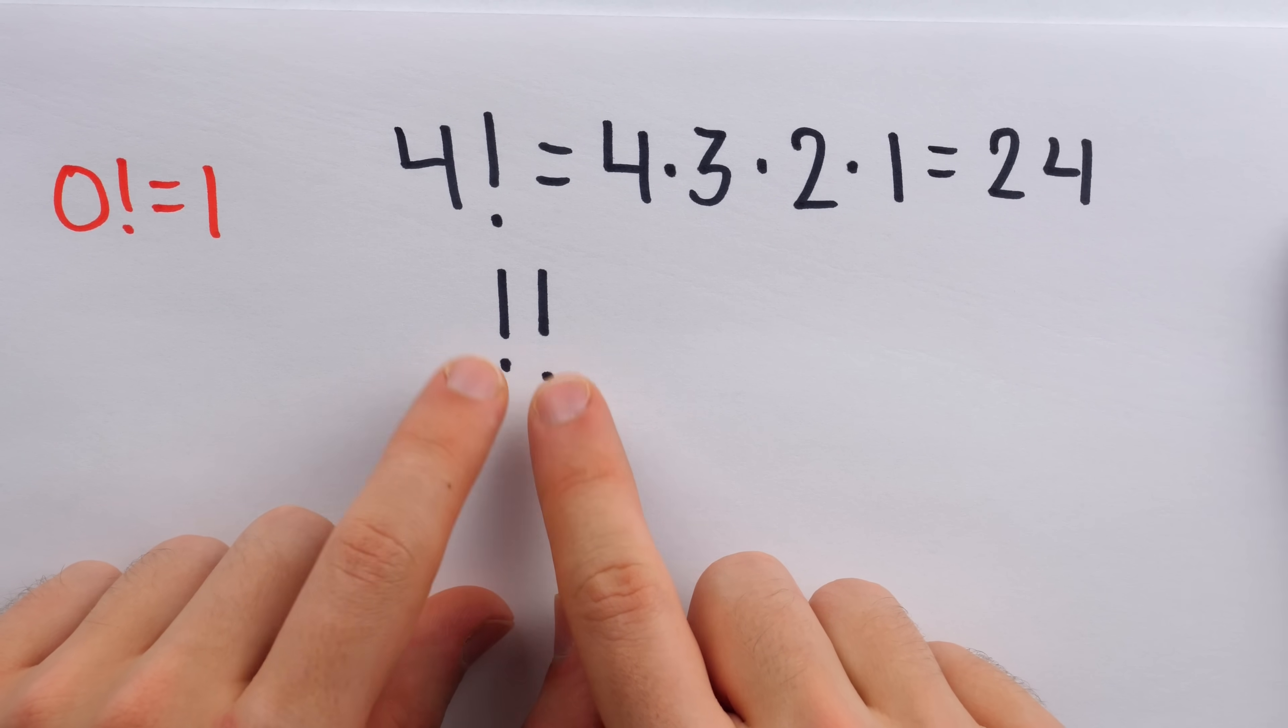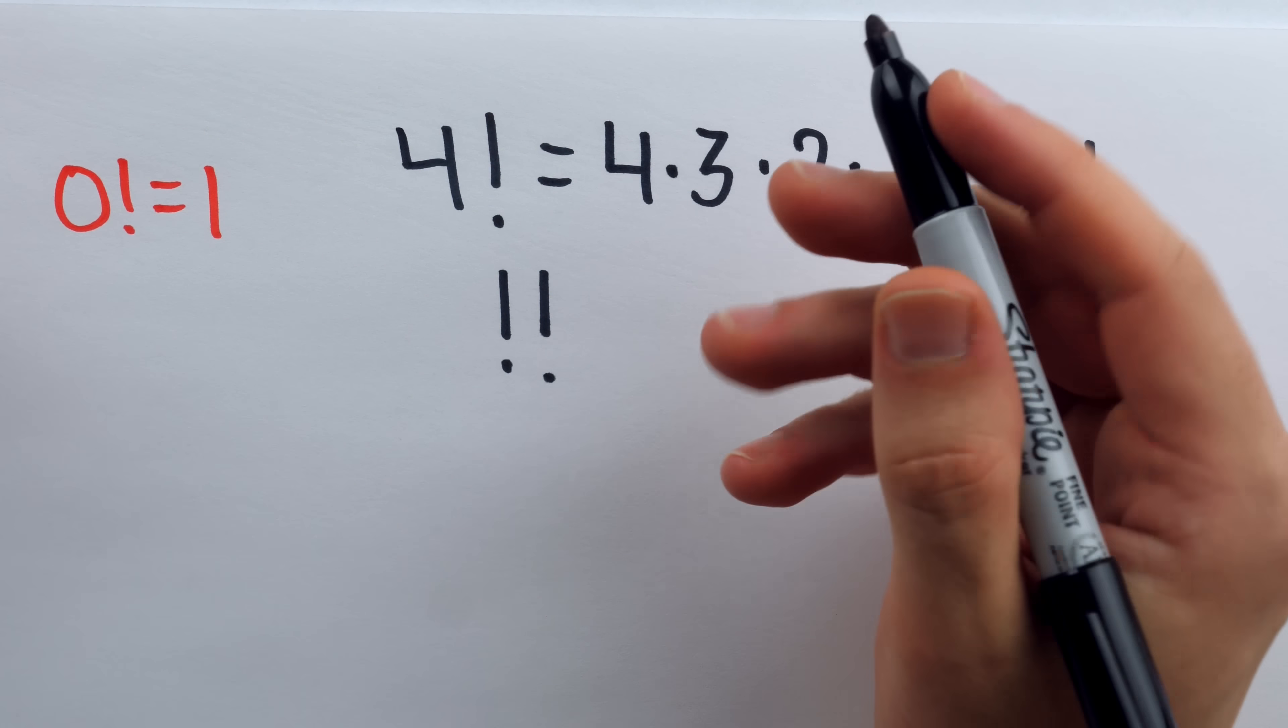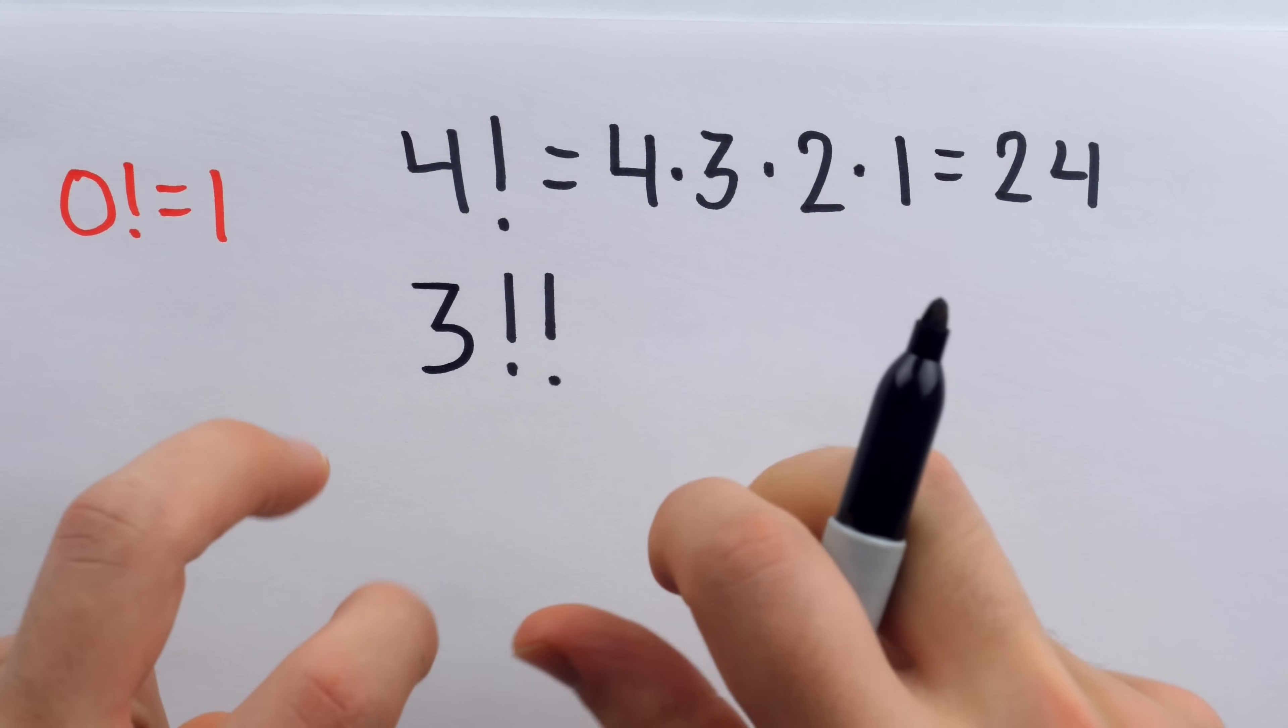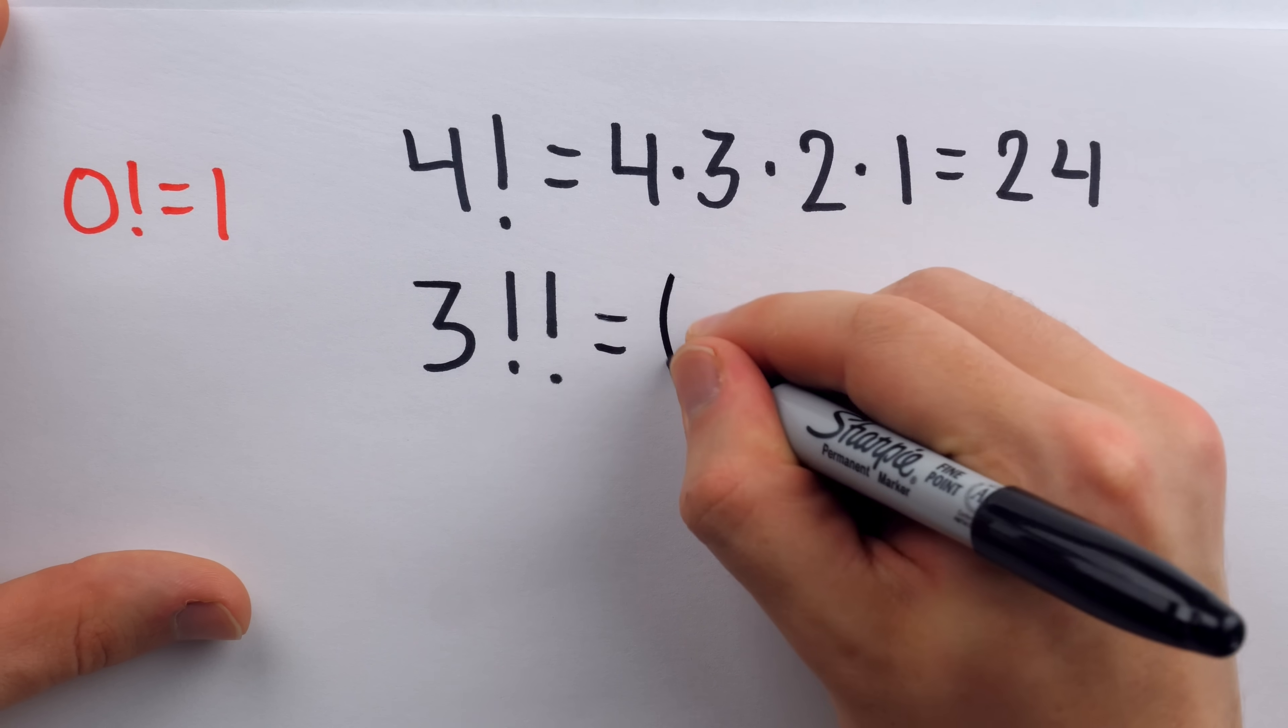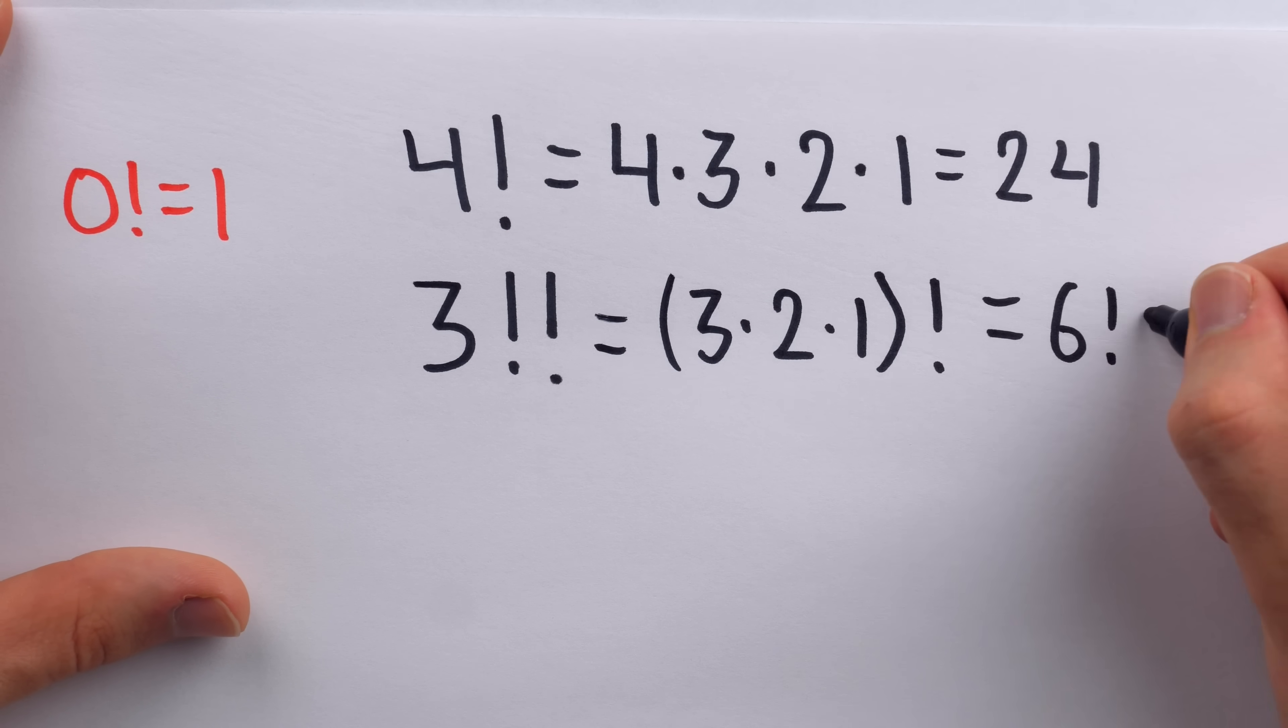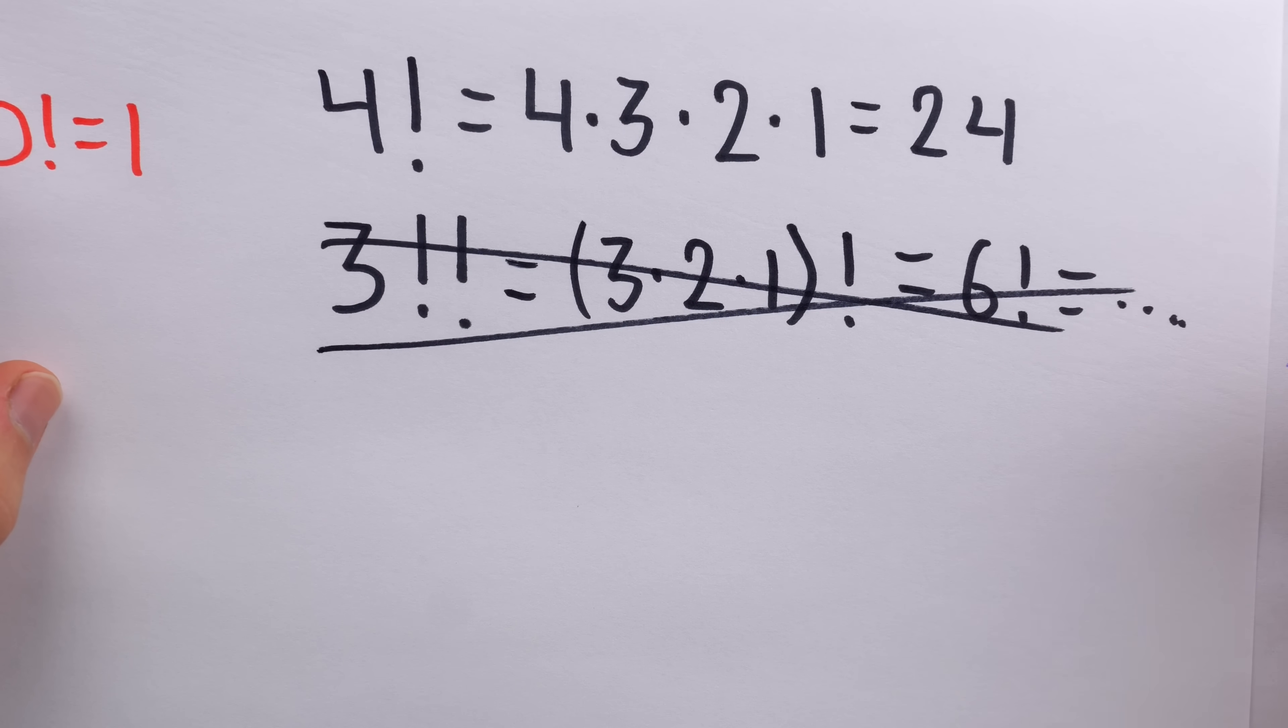But now let's focus on this. Two exclamation points. What the heck does this mean? Well, it's called a double factorial. Now, one possible meaning for this is that it would just be the factorial of the factorial. That would be perhaps the most obvious thing. For example, 3 double factorial. Well, maybe that means this. It means the factorial of 3 factorial. We know that 3 factorial is 3 times 2 times 1. And so maybe we're just supposed to take the factorial of that, which is 6 factorial. And of course, we could compute that if we care to. 6 times 5 times 4 and so on down to 1. But it turns out this is actually not how it works.